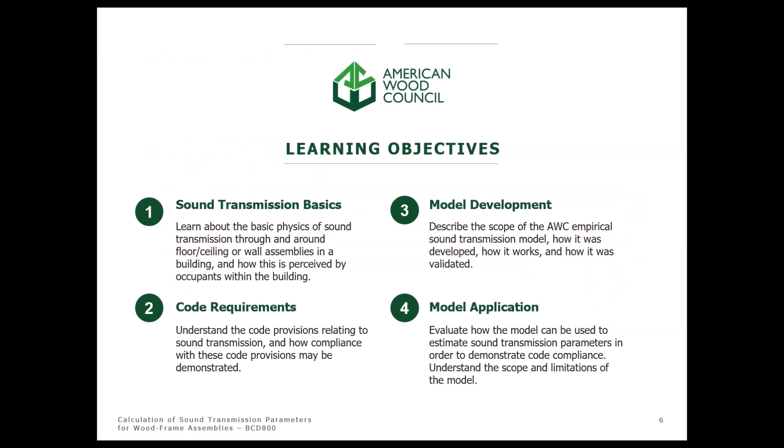There are four primary learning objectives to this course. First, we're going to learn some of the basics of sound transmission physics in buildings and how this is perceived by building occupants. Second, to understand code provisions relating to sound transmission and how you can demonstrate compliance. Third, we'll be able to describe the scope of the AWC empirical model for sound transmission, including how the model was developed, how it works, and how it was validated. Lastly, we'll evaluate ways in which the model can be used to demonstrate compliance with the code through estimation of sound transmission parameters, and we'll talk about the scope and limitations of the model.